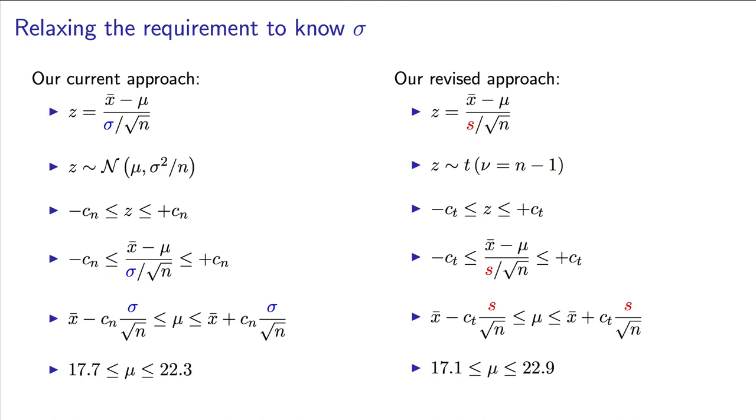I would like to compare this to the bounds from the earlier video, 17.7 to 22.3. Those bounds were from when we happened to know the true standard deviation. Our revised bounds of 17.1 to 22.9 in this video are a little wider. That is because we have used imperfect knowledge of the standard deviation. We have only estimated the standard deviation. That error in the estimation propagates itself into the calculation for the bounds. The bounds must be wider to get the same level of confidence.